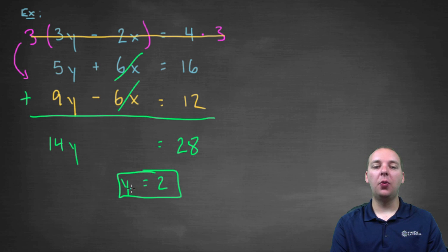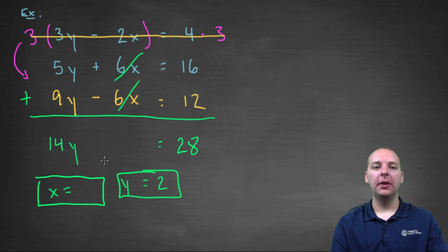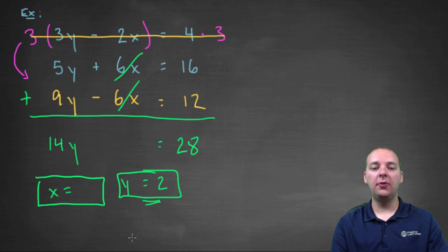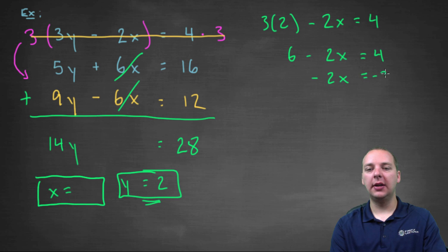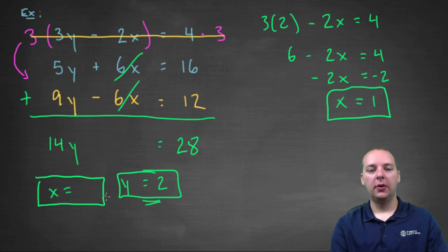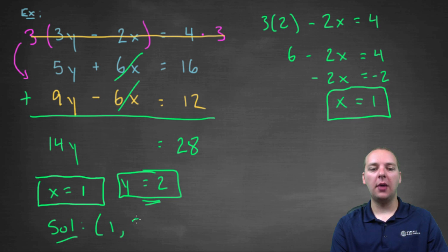We're not done yet — this is the y value, but solutions to systems have both an x value and a y value. To get the x value, take any equation — I'll use the first one — and plug in the known value for y. So we get three times two minus two x equals four, which gives six minus two x equals four. Solving for x: negative two x equals negative two, so x equals one.